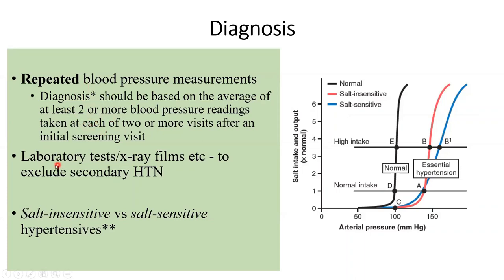If all of this leads to a sustained picture of high blood pressure, then you should make a diagnosis of hypertension. You then run lab tests and X-rays to exclude any secondary cause. When all secondary causes are excluded, you label this person as an essential hypertensive patient.